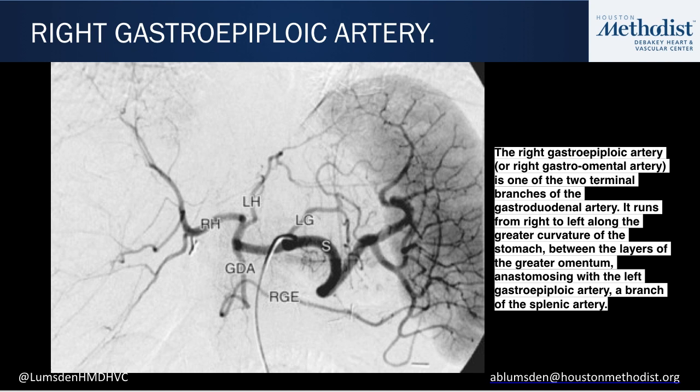Just to review the anatomy: the GDA — the gastroduodenal artery — gives rise to the right gastroepiploic artery, which courses between the two layers of the omentum. Normally, the right gastroepiploic anastomoses with the left gastroepiploic artery, which arises from the splenic artery. However, in this case the left gastroepiploic was divided when the short gastrics were taken down and the proximal stomach was divided. So the right gastroepiploic was really the target.